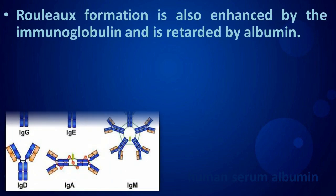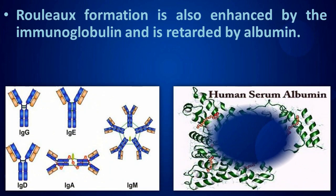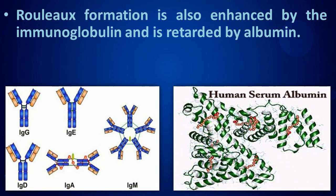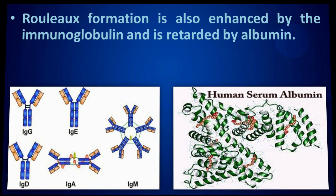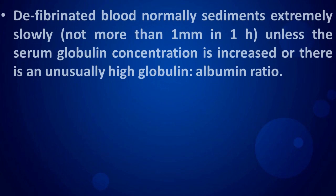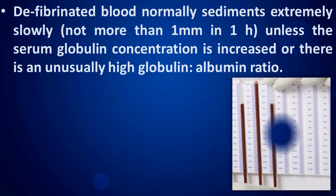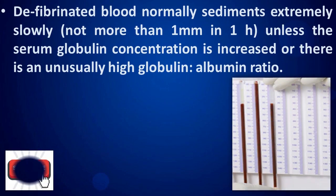Rouleaux formation is also enhanced by immunoglobulins and is retarded by albumin. Defibrinated blood normally sediments extremely slowly unless the serum globulin concentration is increased or there is an unusually high globulin-to-albumin ratio.